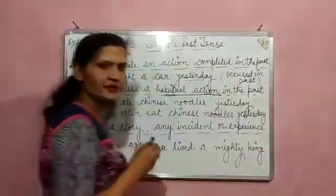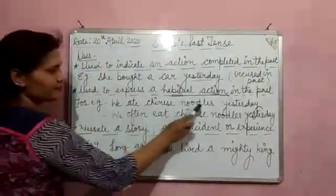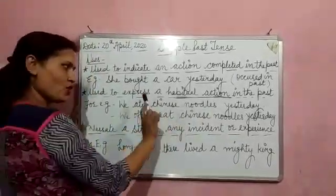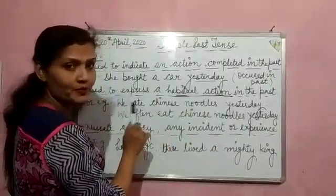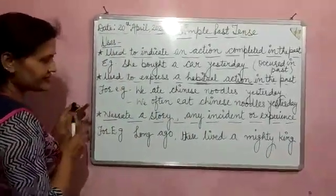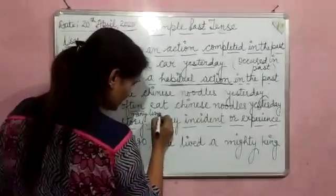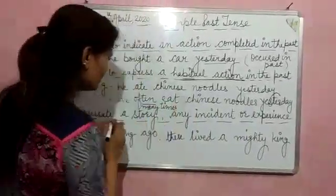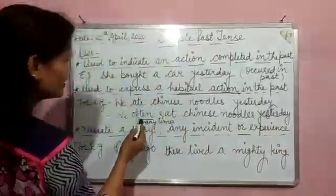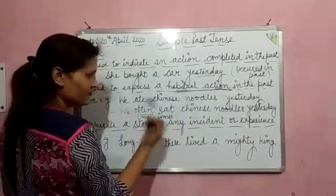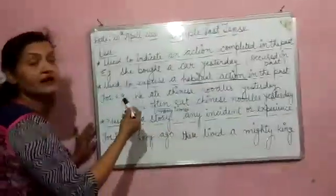What is the difference between the two? In the first sentence, it is a past action and it is over — it has no relation with the present. But in the second example, we use 'often,' which means many times. 'We often eat Chinese noodles' means many times we eat Chinese noodles. That is a habitual action — a regular action.